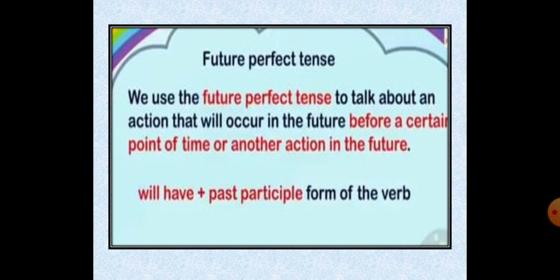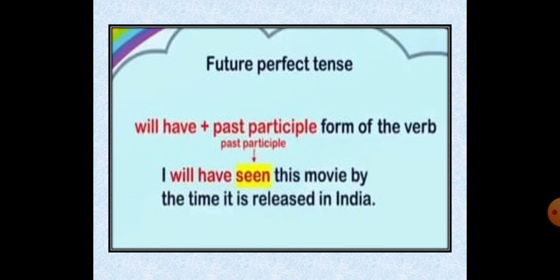The third is future perfect tense. We use the future perfect tense to talk about an action that will occur in the future before a certain point of time or another future action. Future ke andar ek action complete ho chuki ho, tab doosri ho rahi ho — at that time we use future perfect tense. Formation: will have plus past participle. For example: 'I will have seen this movie by the time it is released in India.'